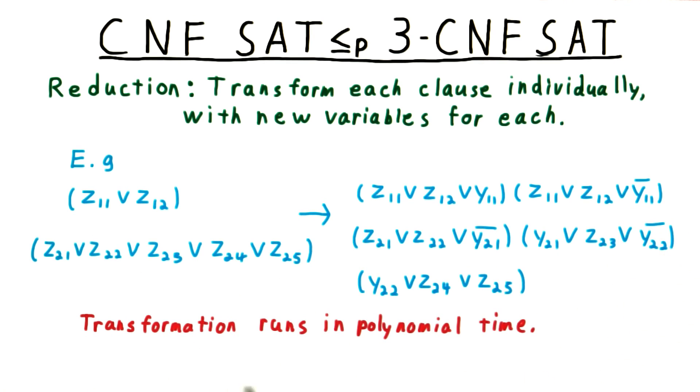And of course, this transformation runs in polynomial time, making the reduction polynomial. We just reduced the problem of finding a satisfying assignment to a general CNF formula to the problem of finding a satisfying assignment to a 3-CNF formula.